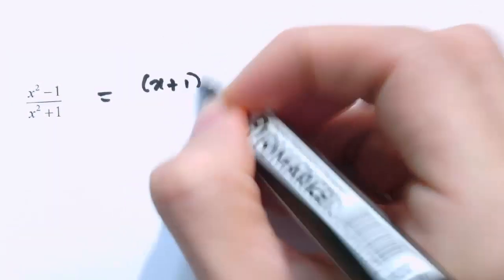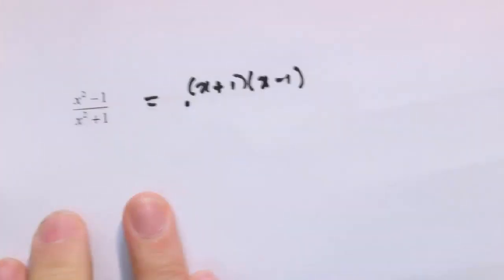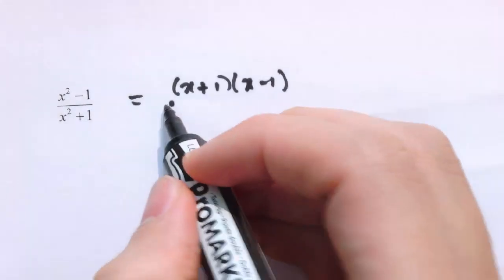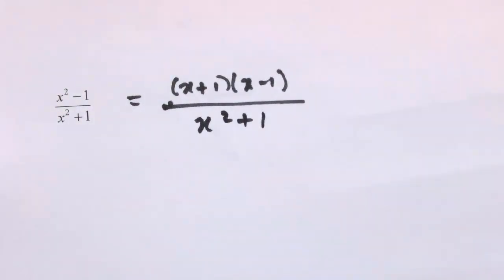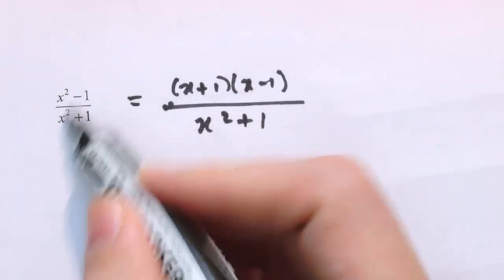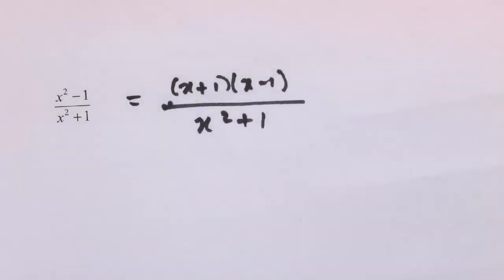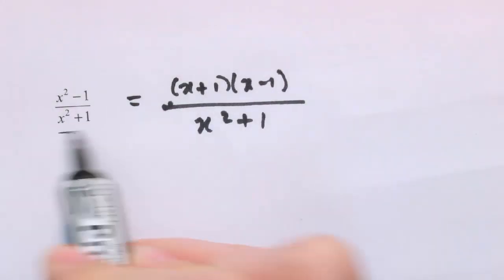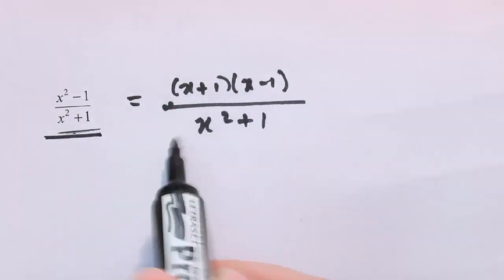Last example: x squared minus 1 over x squared plus 1. We'll try to factorise both. The numerator factorises as (x plus 1) times (x minus 1), but the denominator x squared plus 1 can't be factorised — we've just got to leave it as it is. So actually there's nothing we can do with this fraction; it's in its simplest form already. You certainly can't cancel factors of x or x squared here. You might just leave it like that as the final answer.